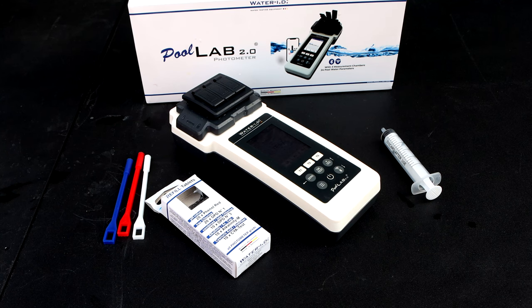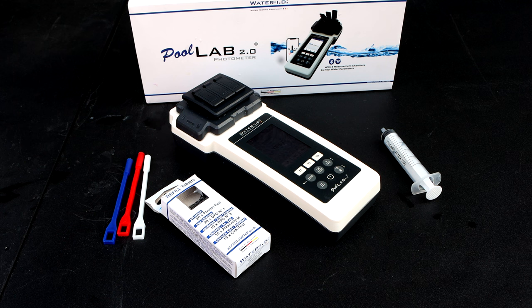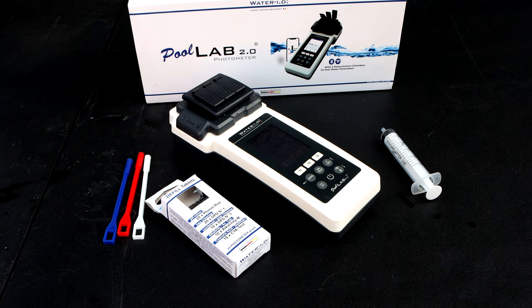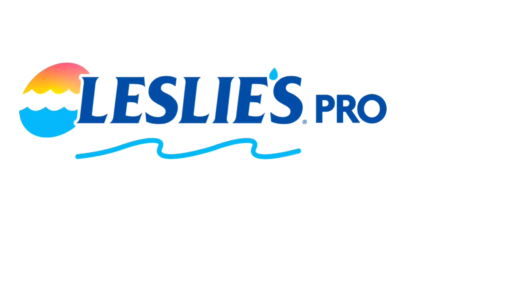If you're in the market for a good photometer, I think the Pool Lab 2.0 or Water Tester would be a great photometer for you. It does three test factors at once which will speed up your testing. It also does 24 different test factors and I really like the screen and how it displays the results and how fast it is to do the testing.